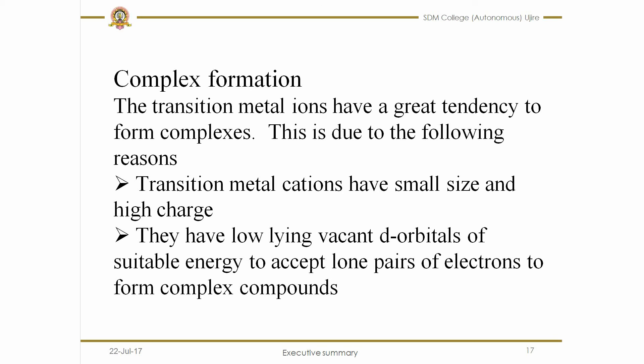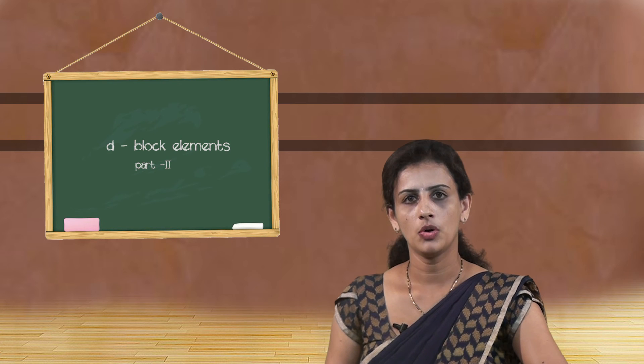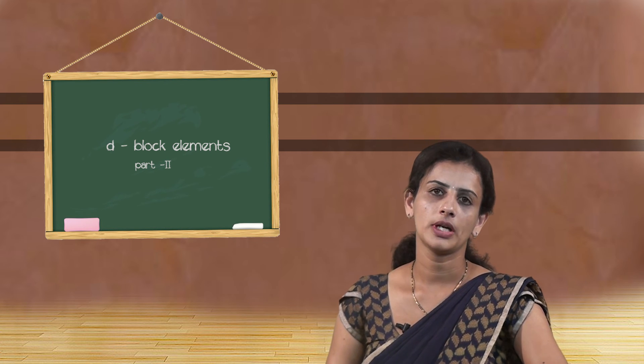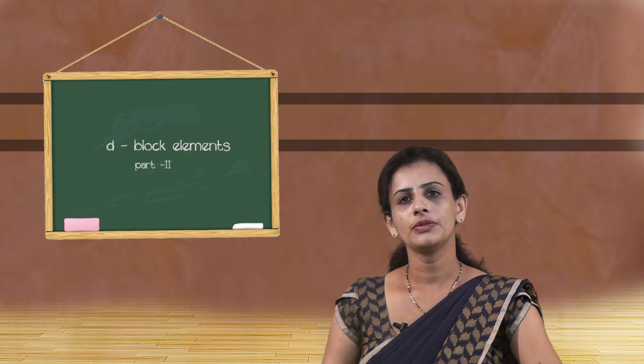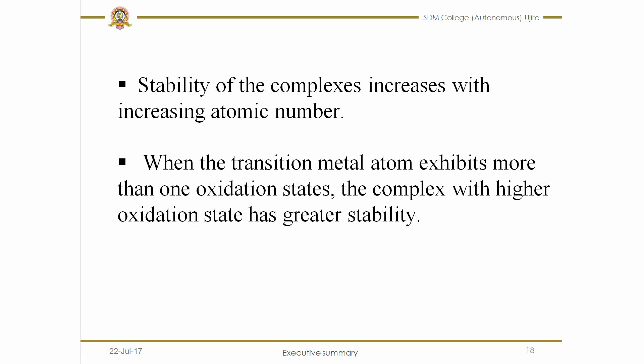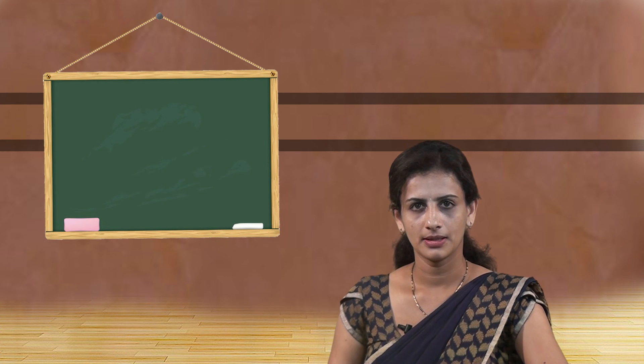The ligands donate a lone pair of electrons to the central metal atom, which has vacant d orbitals to accept that lone pair, forming a bond — these are called complexes or coordination compounds. The stability of complexes increases with increasing atomic number. When a transition metal atom exhibits more than one oxidation state, the complex with the higher oxidation state has greater stability. We have now discussed all the properties of D-block elements. Thank you.